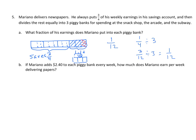All right, let's go on to the next part. It says, if Mariano adds $2.40 to each piggy bank every week, how much does he earn per week delivering newspapers? Go back to our tape diagram. And again, we know that this amount is $2.40. Once we figure out that, we can figure out what one-fourth is. And then we can find four units.